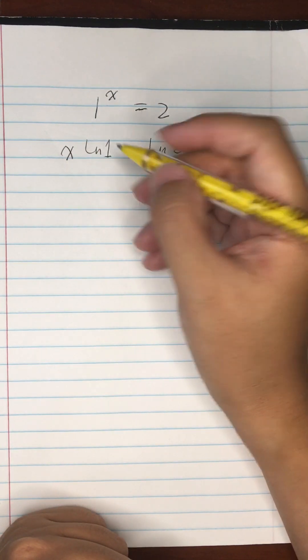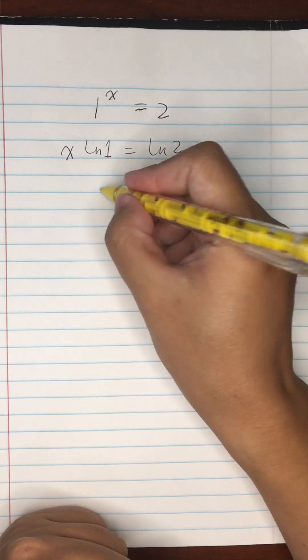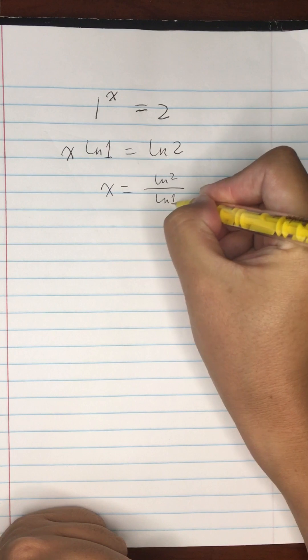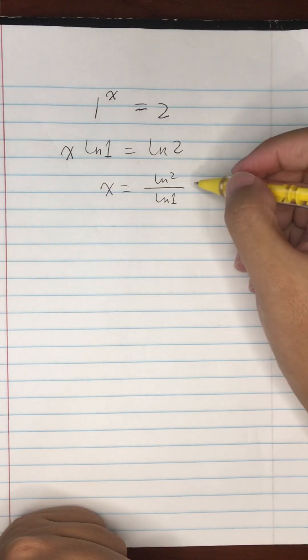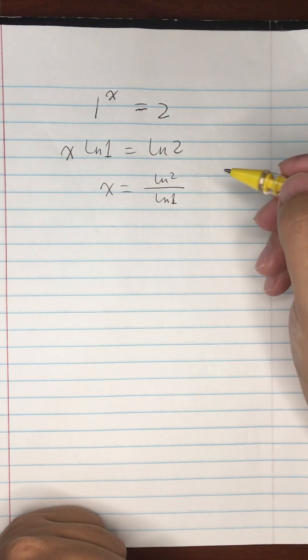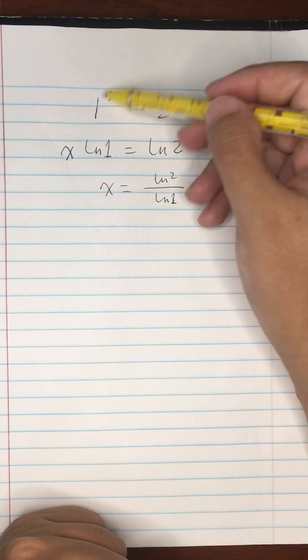We know that log(1) is actually 0, so x is going to equal ln(2) divided by ln(1). But that's not a real solution, it's not a real number solution. If our solution domain is limited to real numbers, then there is no solution.